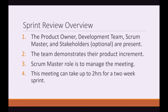Sprint Review Overview. The Product Owner, Development Team, Scrum Master, and Stakeholders are usually present in this meeting. Please note that stakeholders are optional. The team demonstrates their product increment in this meeting. The Scrum Master's role, as usual, is to manage and facilitate the meeting. This meeting can take up to 2 hours for a 2-week sprint.